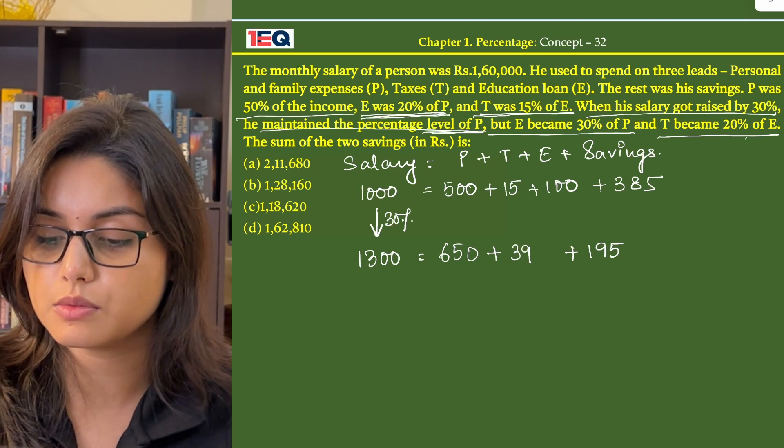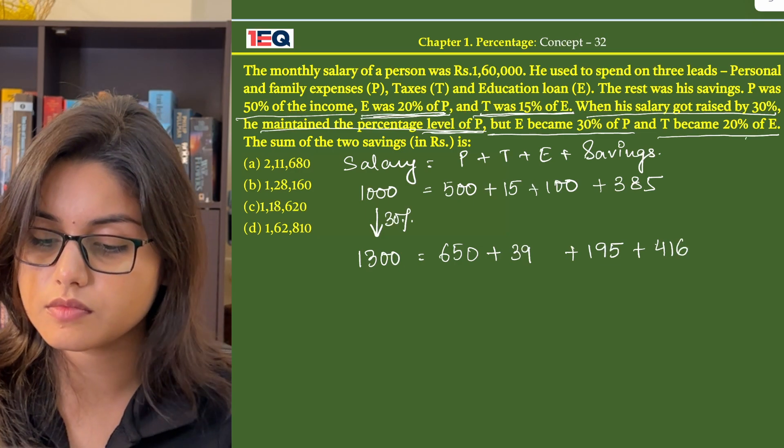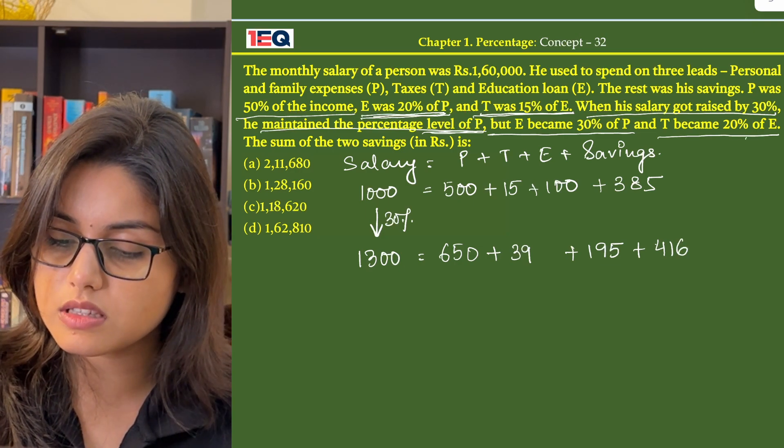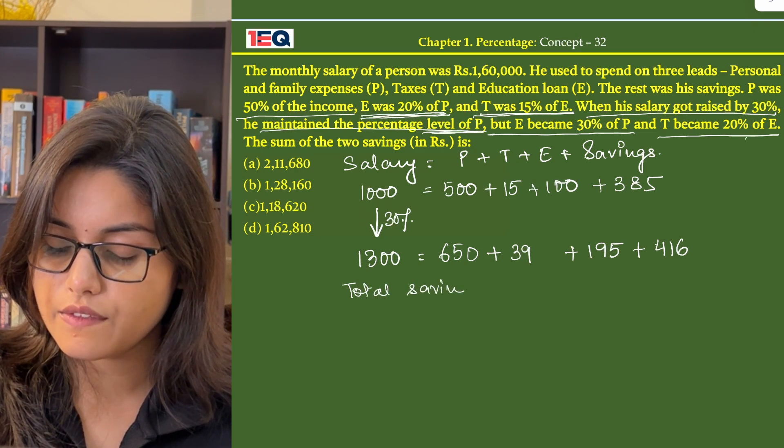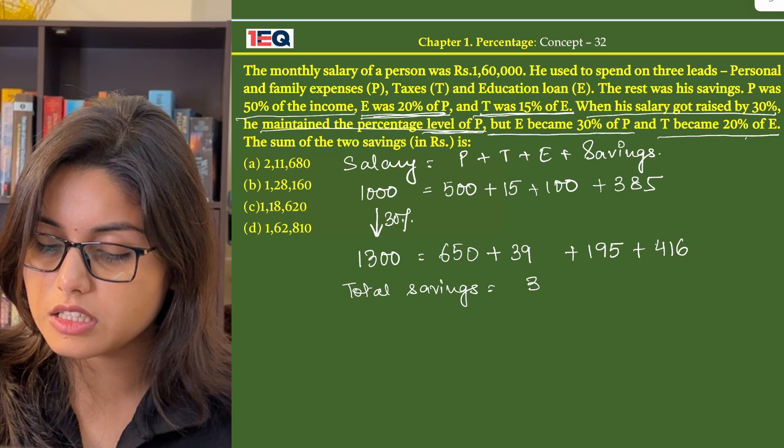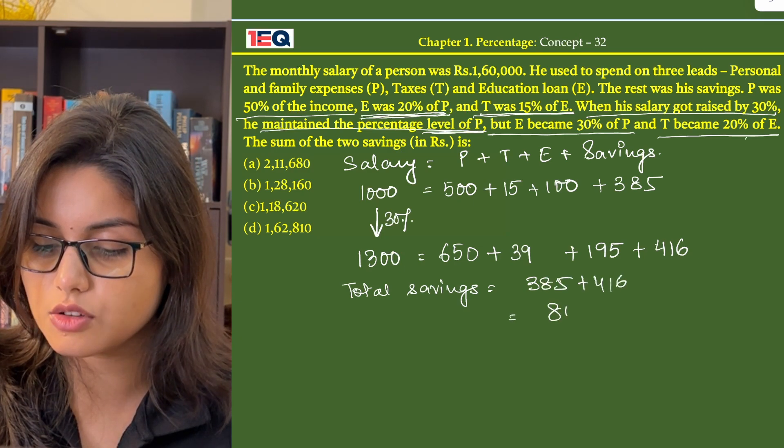Now after subtracting P, T and E from 1300, we get the savings as 416. So what is our total saving? Total savings over here we have 385 plus 416 that is 801.